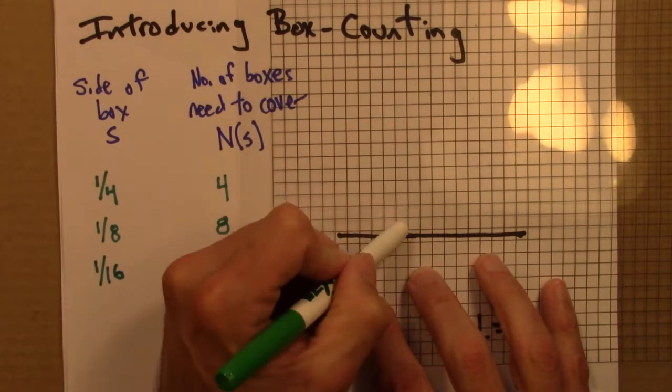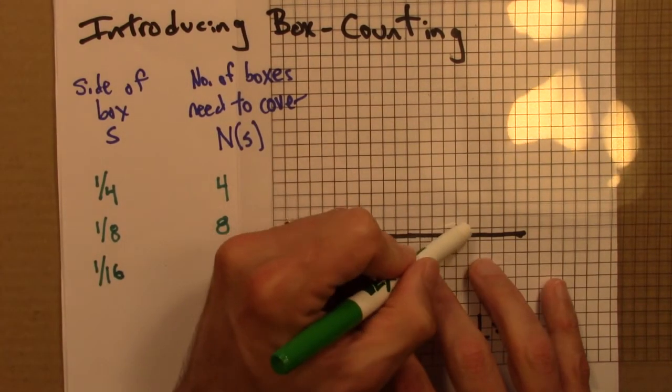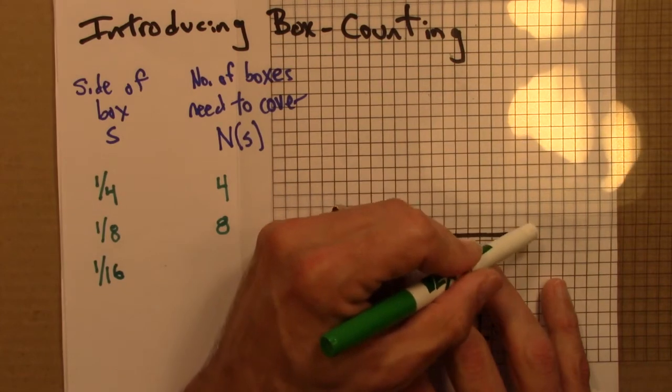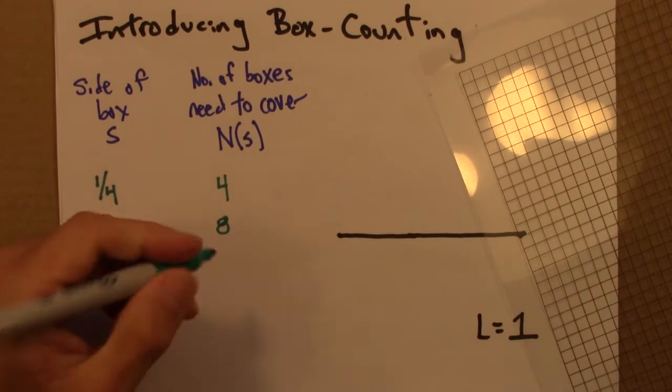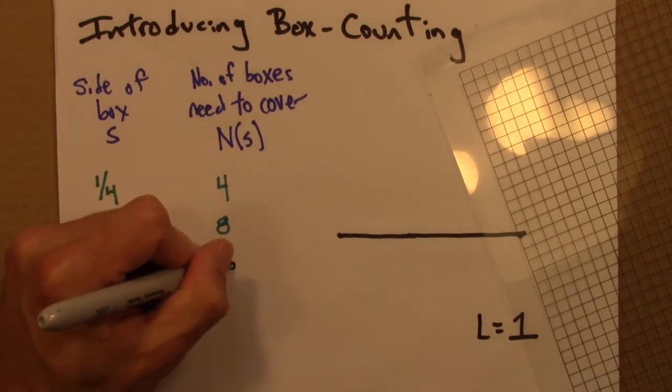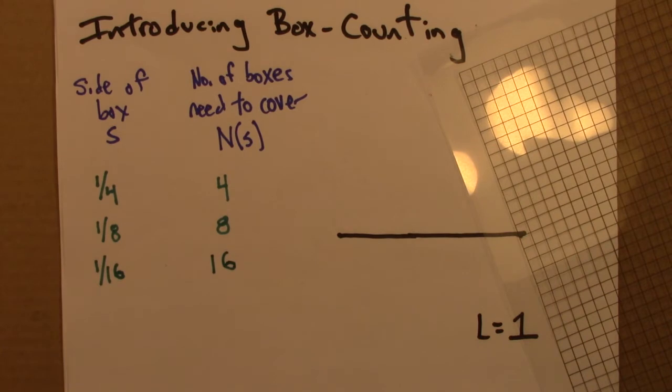One, two, three, four, five, six, seven, eight, nine, ten, eleven, twelve, thirteen, fourteen, fifteen, sixteen. It takes sixteen boxes to cover the line. And we could keep going, but we'll stop here. This seems like plenty.